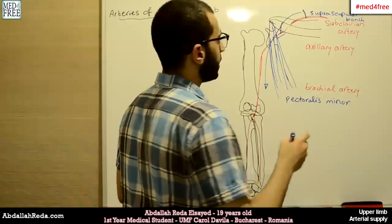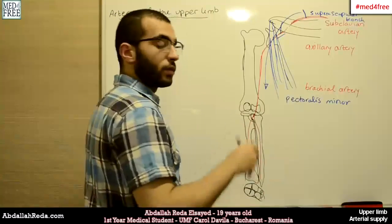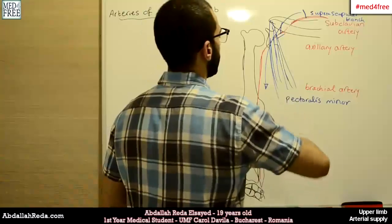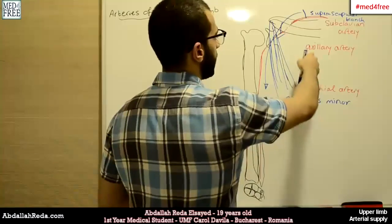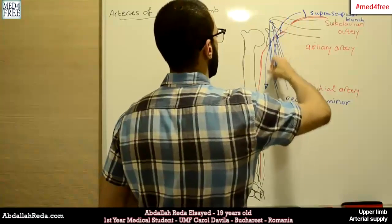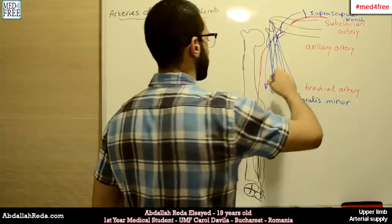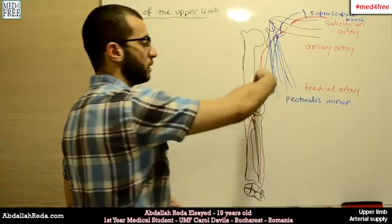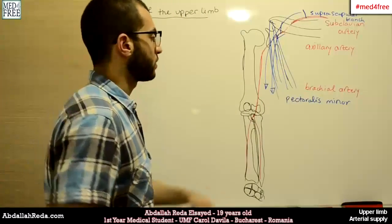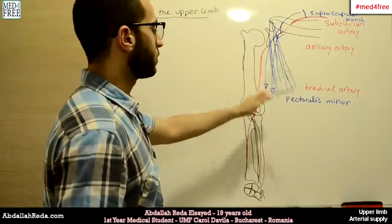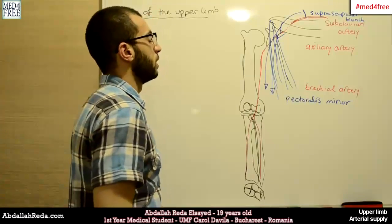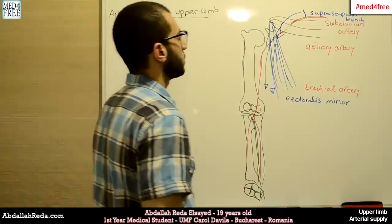Also from this region, we have the lateral thoracic artery. The lateral thoracic artery is a branch of the axillary artery, and it also supplies the lateral muscles of the thorax — serratus anterior and the intercostal muscles.